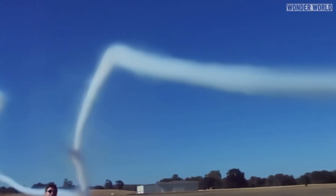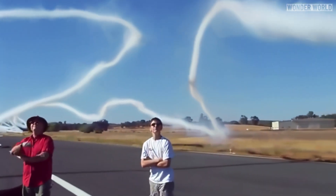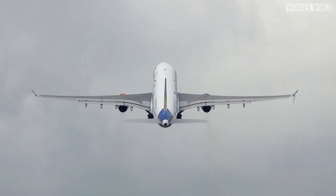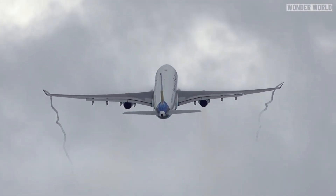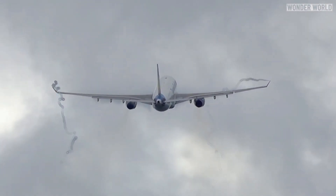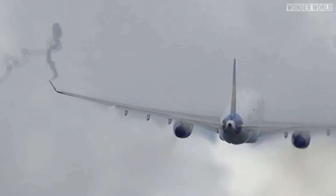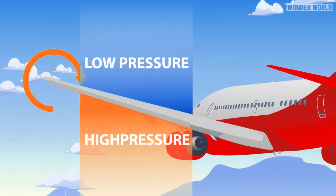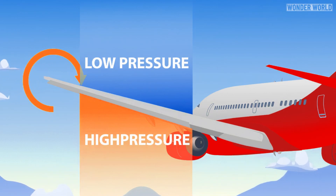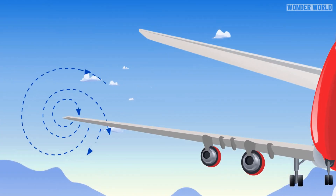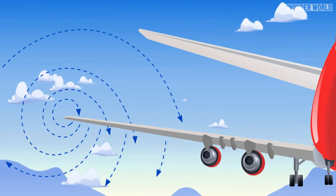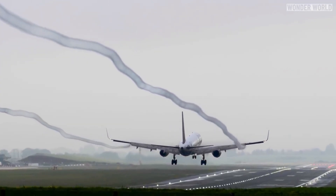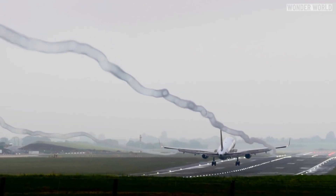Even though this effect was created using smoke generators and performed at an air show, every plane creates wingtip vortices as a natural byproduct of lift generation, caused by the pressure difference between the upper and lower surfaces of the wing. The high pressure air beneath the wing flows around the wingtips towards the lower pressure area above, creating circular or spiral patterns — tight swirling flows that trail behind the aircraft like sideways tornadoes.